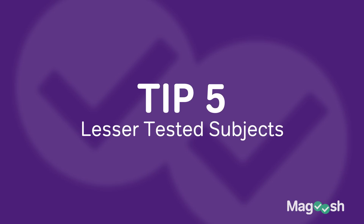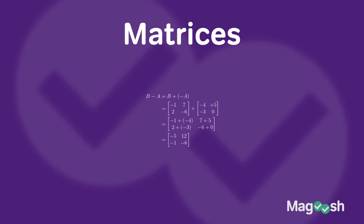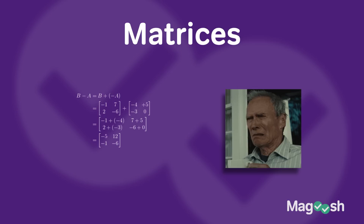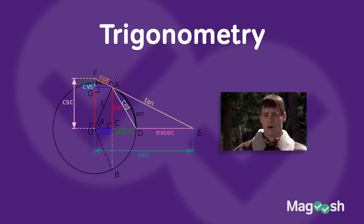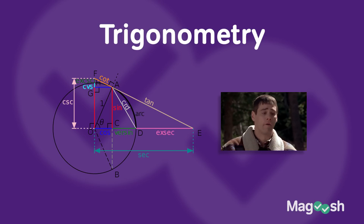Tip number five is don't spend too much time on lesser-tested subjects. Number one is matrices — on average you will see somewhere between zero and one questions on the ACT covering matrices. It's a great thing to know but don't spend 50% of your time trying to master it. Another one is trig. If trig is your only weak section then put all your time into it, but otherwise spend only a little time on it. A lot of students want to go straight to trig because they know it's the hardest stuff, but there will probably only be two or three questions on trig, and if anything they need to go back to pre-algebra and relearn some concepts they haven't seen since eighth grade.